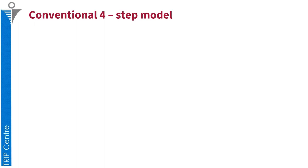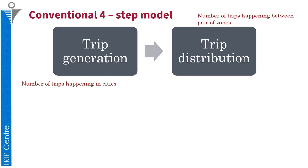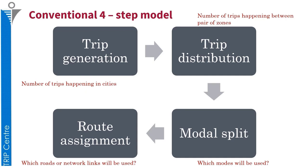Conventionally, we have a four-step travel demand model applied for understanding travel demand in existing conditions and future scenarios. The first step includes trip generation, which helps in estimating the number of trips happening in cities, irrespective of where these trips are going. The second step includes trip distribution — the number of trips happening between pairs of zones. The third step is mode split, which distributes the trip distribution matrix by modes of transport, telling us which modes will be used for a certain trip. The last step includes route assignment, which allocates demand from trip generation, trip distribution, and mode split to the different route network links.